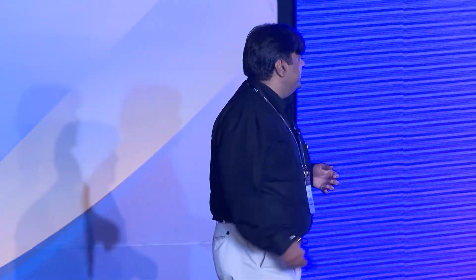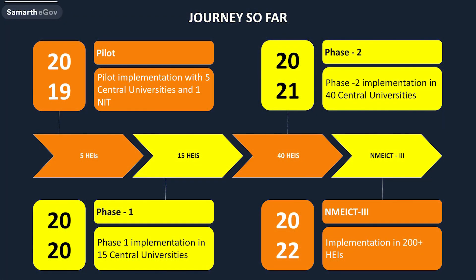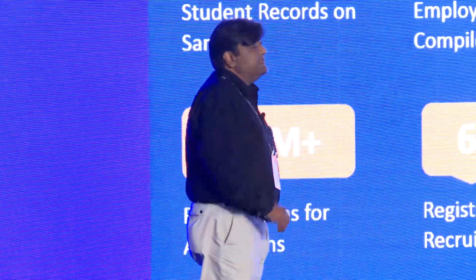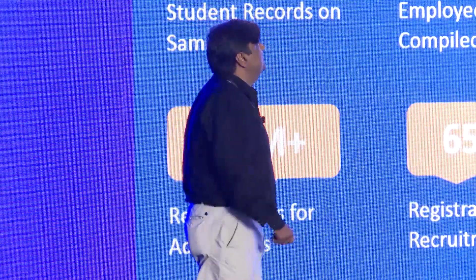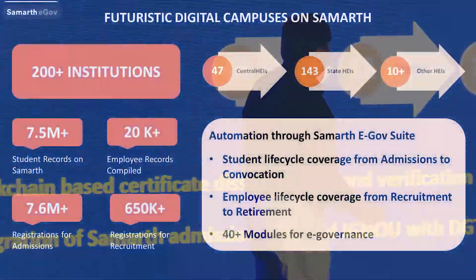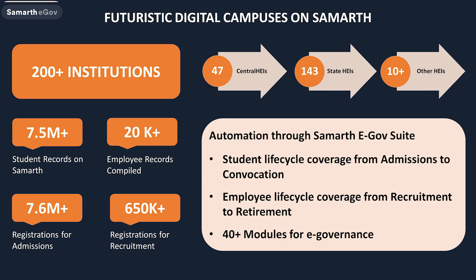This is the journey so far. We started in 2019 with five higher education institutions, and by 2022 we had crossed 200 institutions, with an objective to cover 500 more this year. Out of those 200 institutions, we have 47 central universities, 143 state higher education universities, and 10-plus other higher education institutions including IIMs and other institutions of national importance.